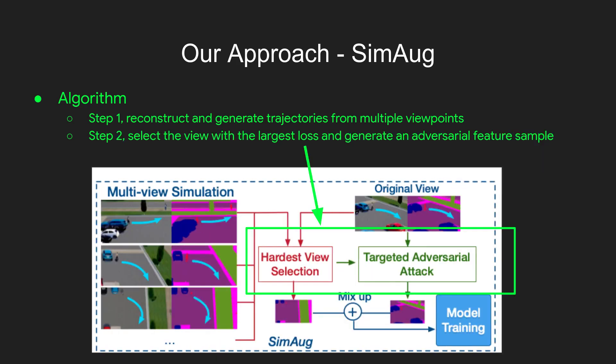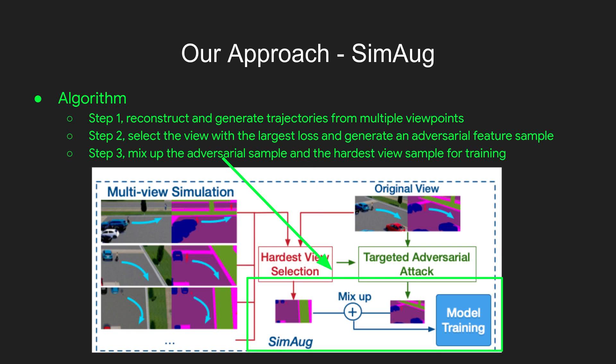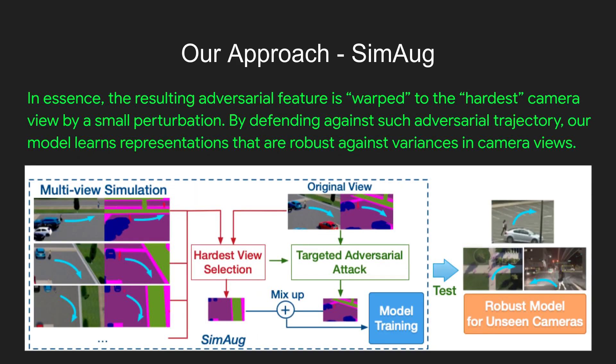Step two, we select the view with the largest loss and generate an adversarial feature sample, as shown in the graph. Step three, we mix up the adversarial sample and the hardest view sample for training. In essence, the resulting adversarial feature is warped to the hardest camera view by small perturbations. By defending against such adversarial trajectories, our model learns representations that are robust against variance in camera views.